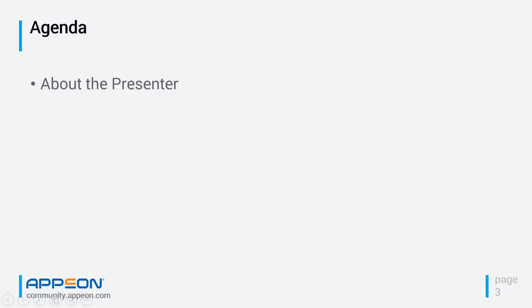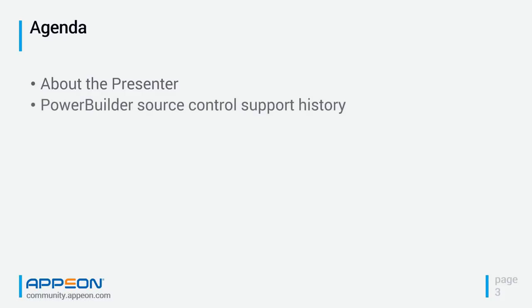Let's look at our agenda. We will talk about who I am, who I work for, and why you would want to listen to me. Then we'll discuss the history of source code control support in PowerBuilder — how we got to where we are today — and look at what we need to install to get started with Git.